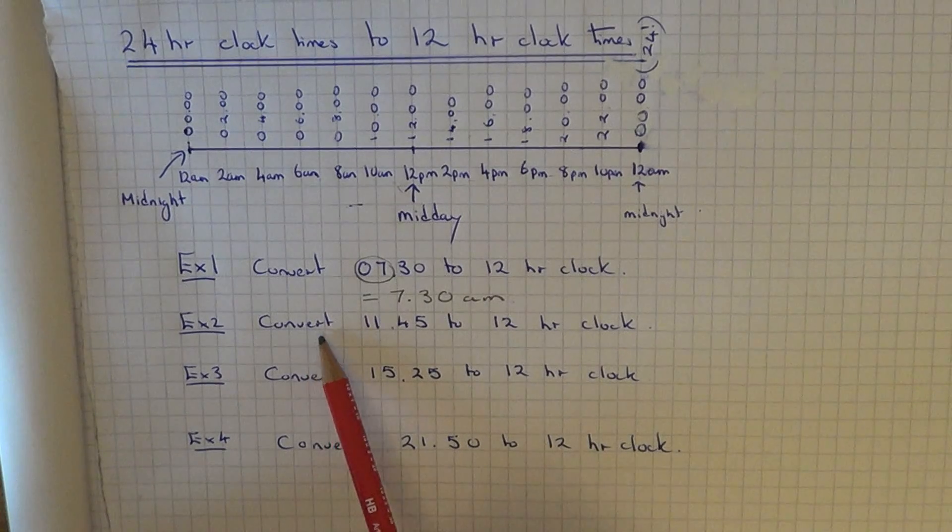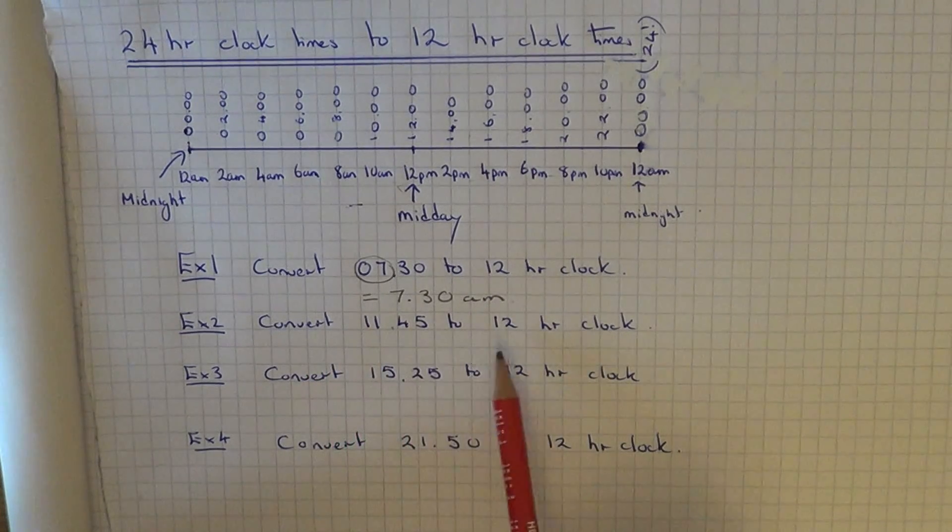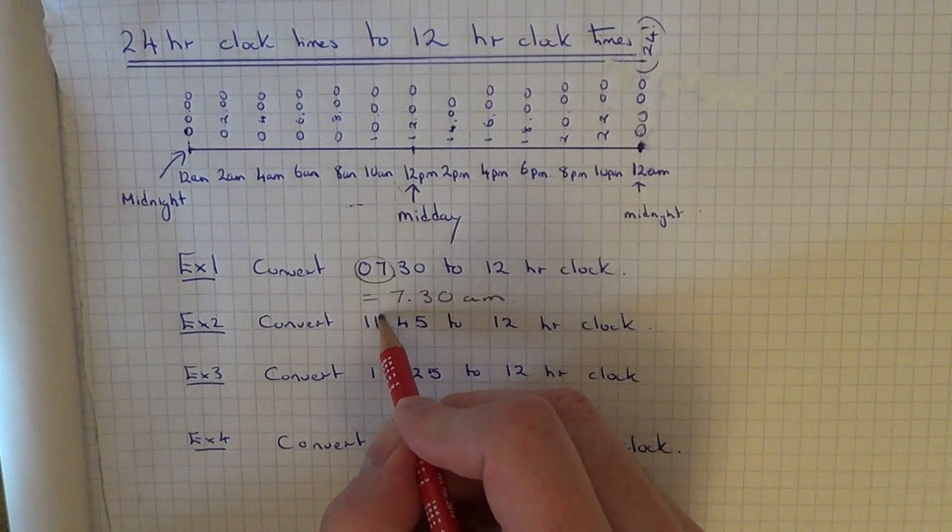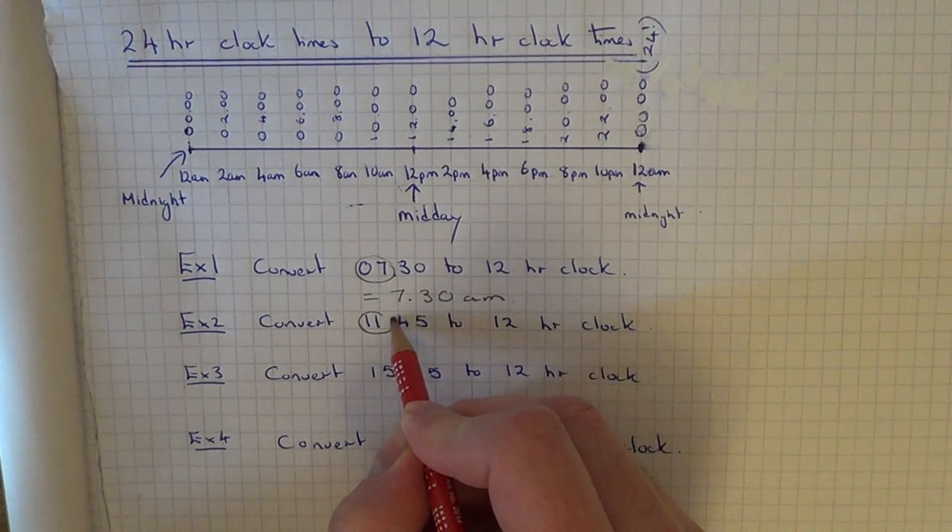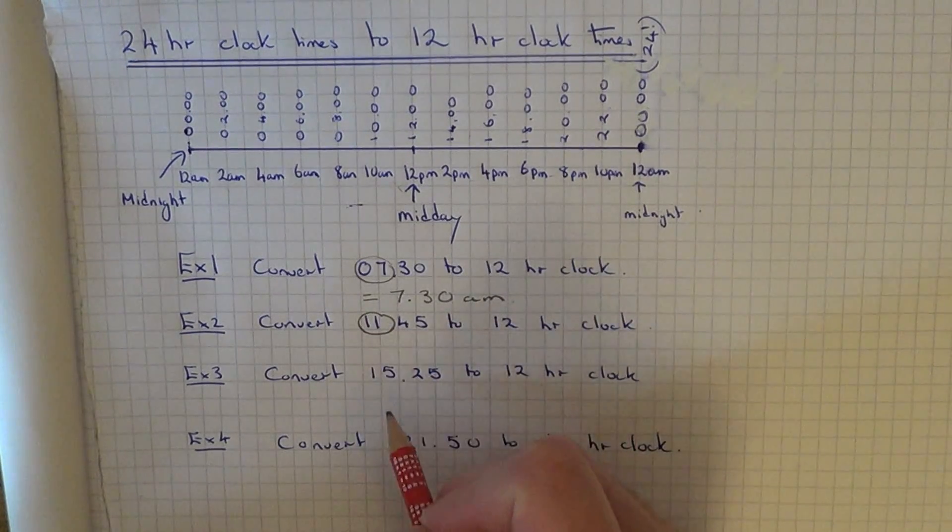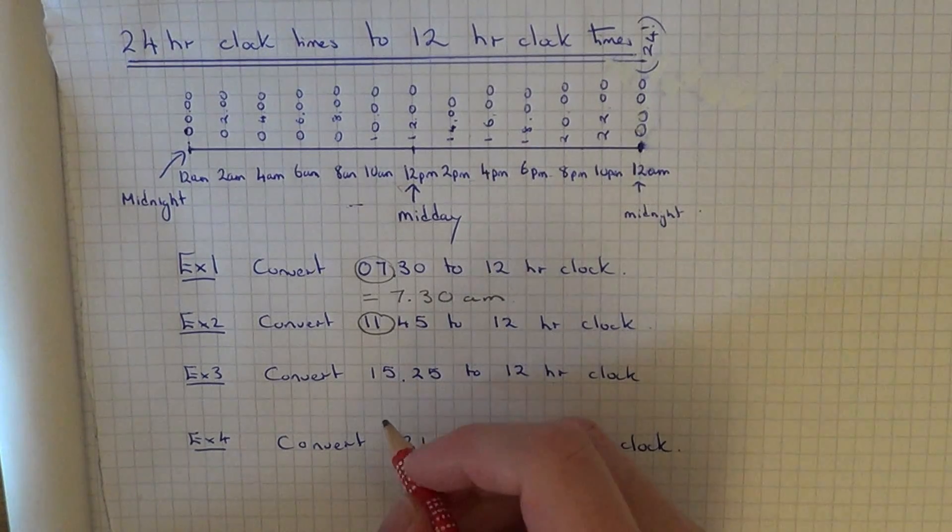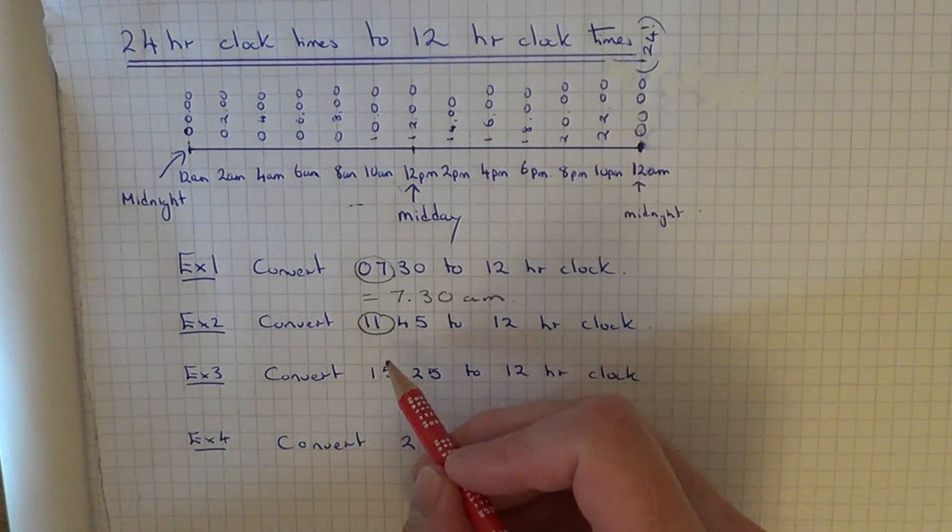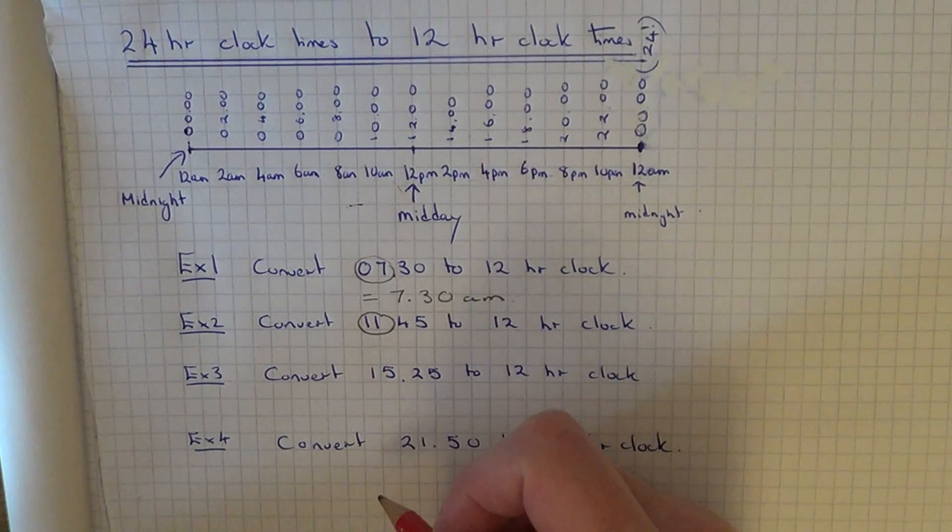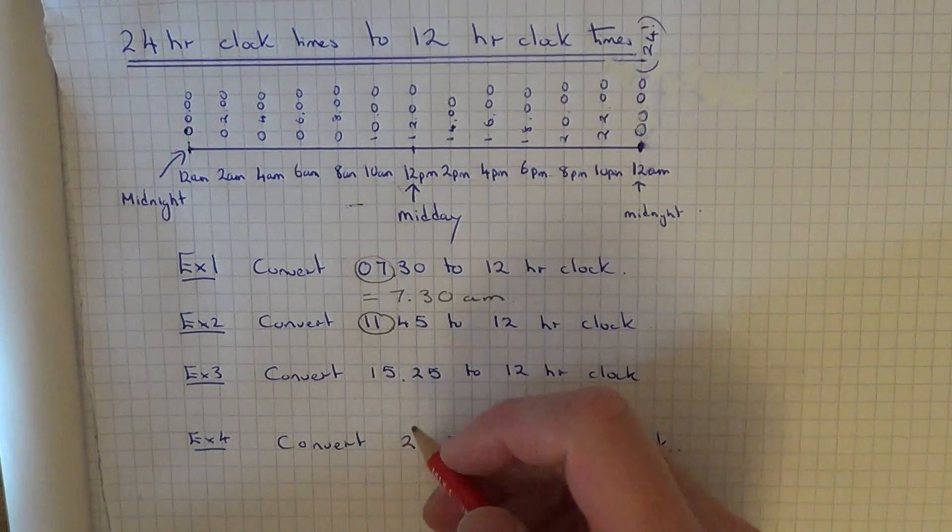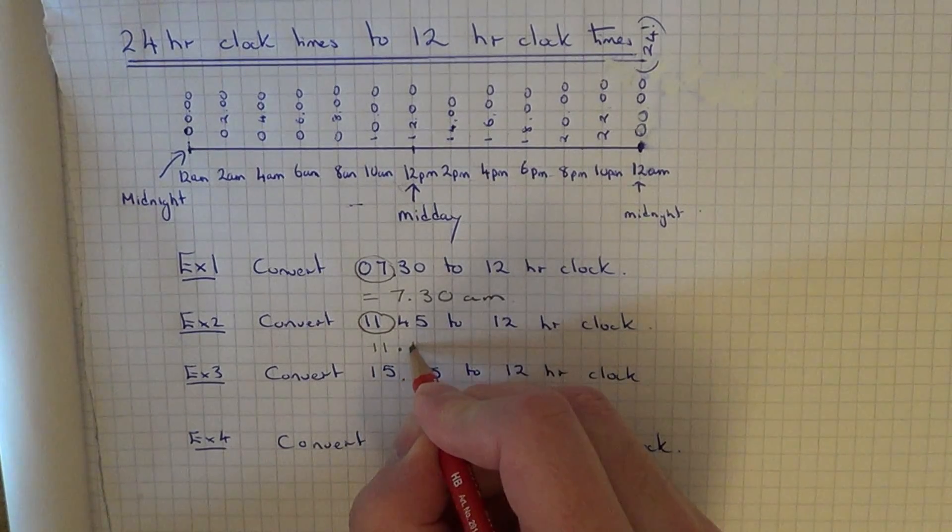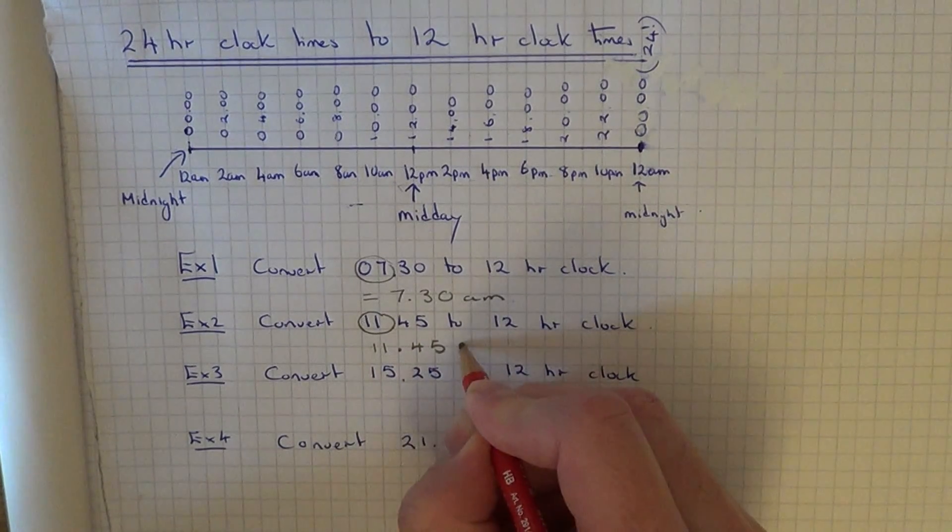So we go on to example 2. This time we have to convert 11:45 into the 12-hour clock. So again, focus on the hour part of our number. This number 11 is underneath 12, so the time is in the morning. We don't need to do anything to this time apart from put AM at the end. So it will be 11:45 AM.